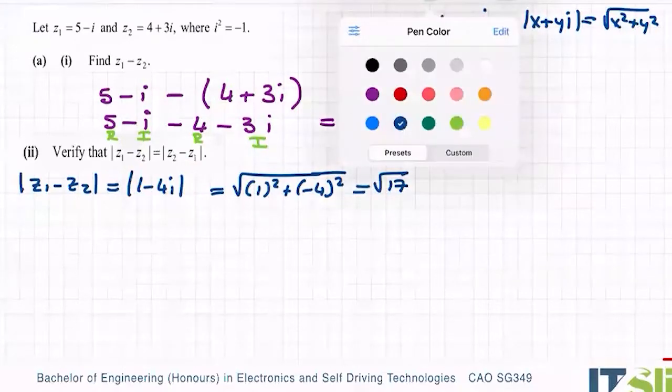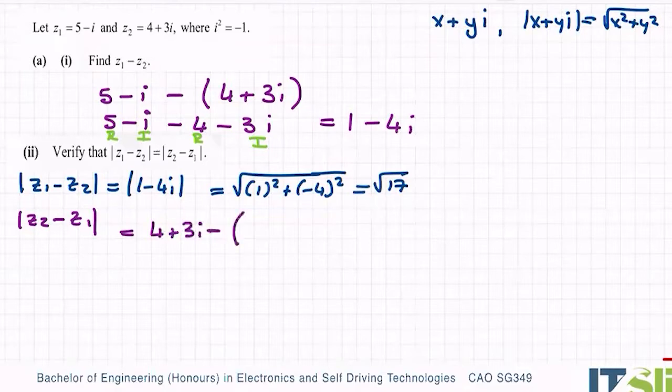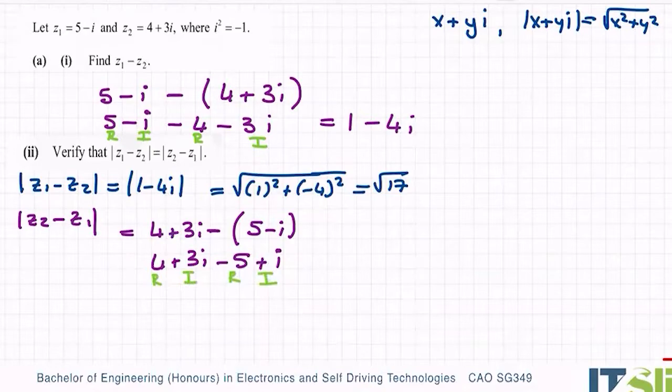So now I have to find the modulus of Z2 minus Z1. Now of course, I don't know what Z2 minus Z1 is because I wasn't asked to find it, so I have to work that out first. So Z2 is 4 plus 3i minus 5 minus i. So 4 plus 3i minus 5 - now we have minus minus this time to be plus i. So when you're subtracting, it changes the signs of everything after it. So that's why he becomes now minus 5 and he becomes plus i. So again, just like before, I have real imaginary, real imaginary, so group the reals together. So 4 minus 5 is minus 1 plus 3i plus i is plus 4i.